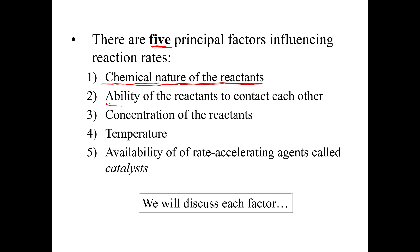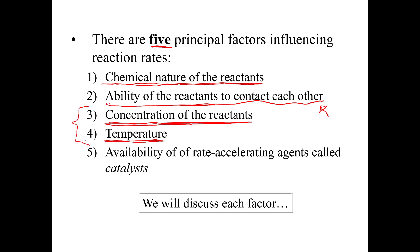We also have to think about the ability of reactants to contact each other — reactants can only react when they touch. Third, the concentration of the reactants. If we have two solids, their ability to contact each other is quite low. Fourth, very important: temperature. In this particular lab we're going to talk about concentration and temperature in particular. And fifth, the availability of catalysts — enzymes are biological catalysts that accelerate rates of reaction.